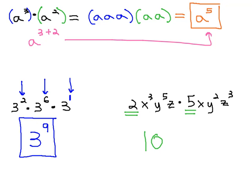And then when we look at the variables, we can see how many of each variable is multiplied together. We have x cubed, times x to the first. There are a total of 4, or 3 plus 1, x's multiplied together.